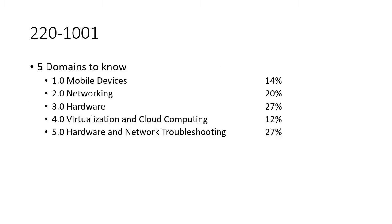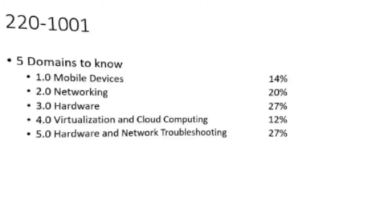There are five domains that we need to know. The first one is mobile devices, which accounts for about 14% of the exam. I want you to focus on the percentages, but they're not set in concrete — CompTIA is saying about 14% will come from that area, about 20% from another area, 27% from another. So you won't have a leg to stand on if you try to count out exactly how many questions per domain.